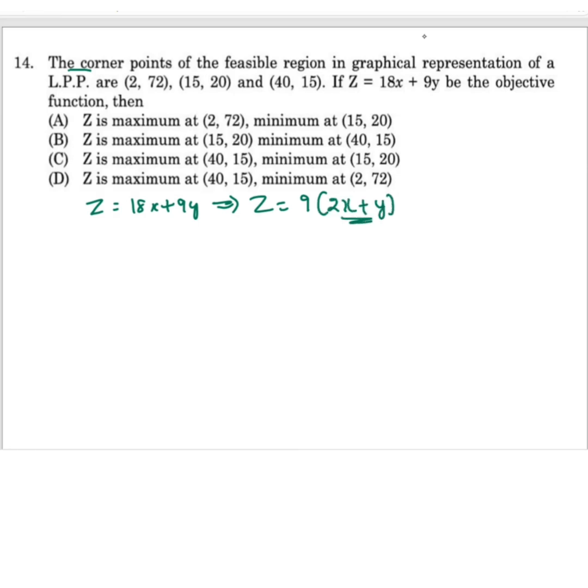Let us find for 2x + y, the points that they are given at. We will take the first point (2,72). So here we will just find for 2x + y. 2x + y is 2 into x is 2 and y is 72.